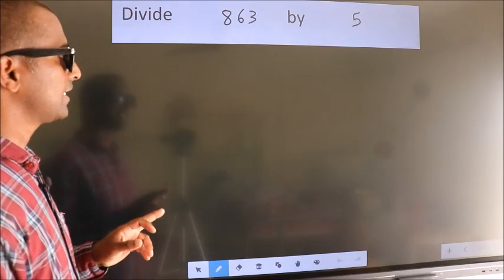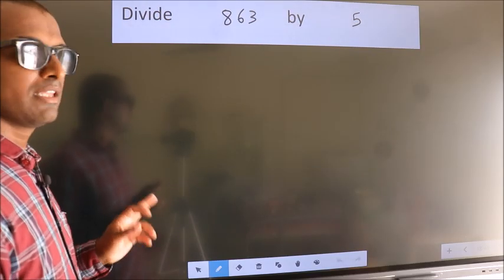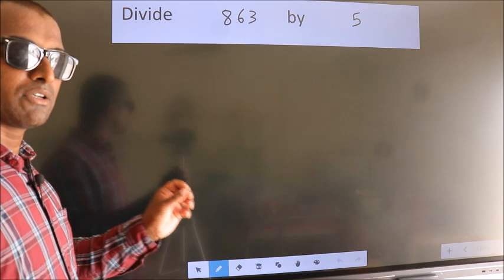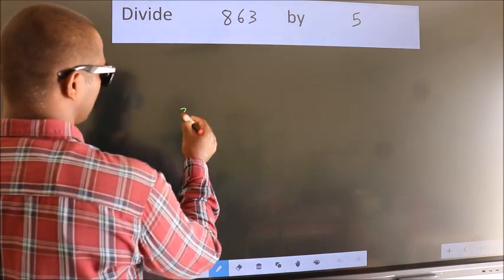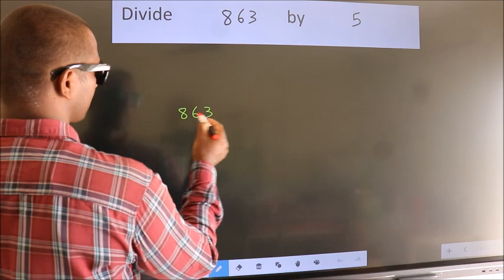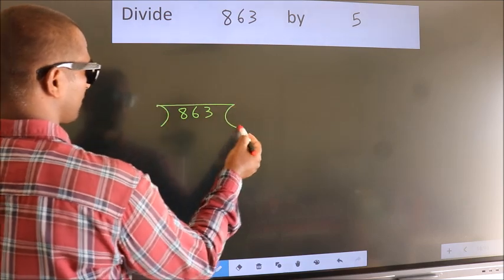Divide 863 by 5. To do this division, we should frame it in this way: 863 here, 5 here.